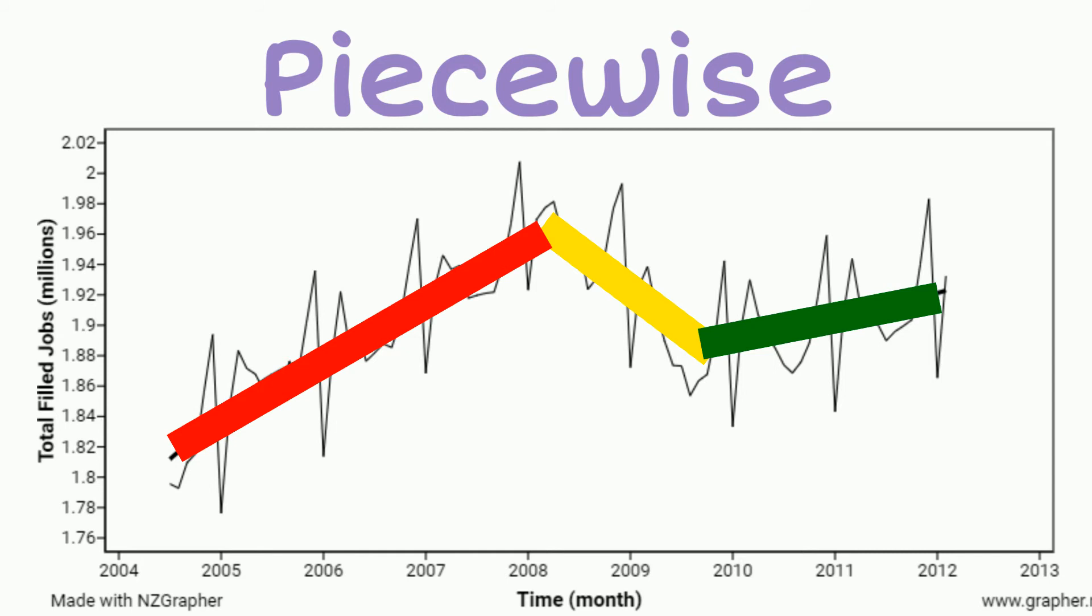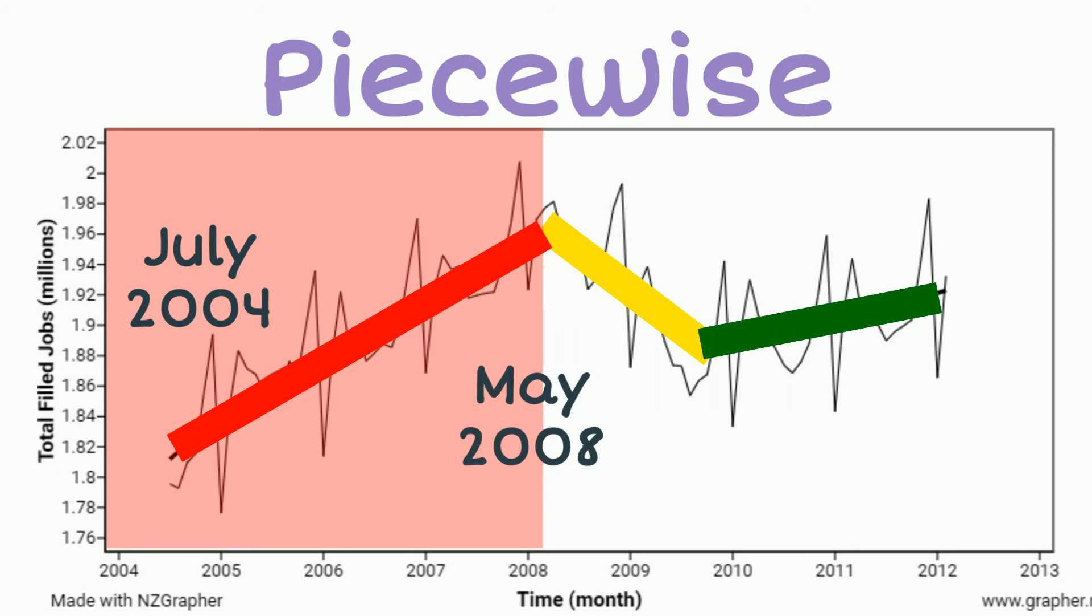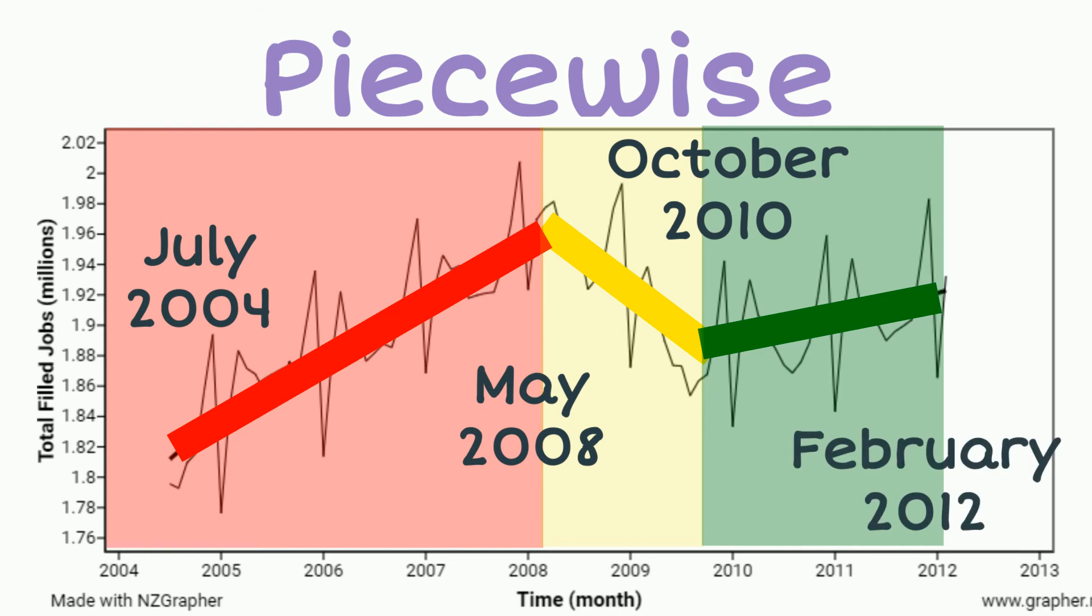So we can see in our graph that there are three clear sections, one going from July 2004 until May 2008. The second section goes from May 2008 until July 2010. And the third section goes from October 2010 to February 2012. So we're going to look at each of these sections one at a time now.